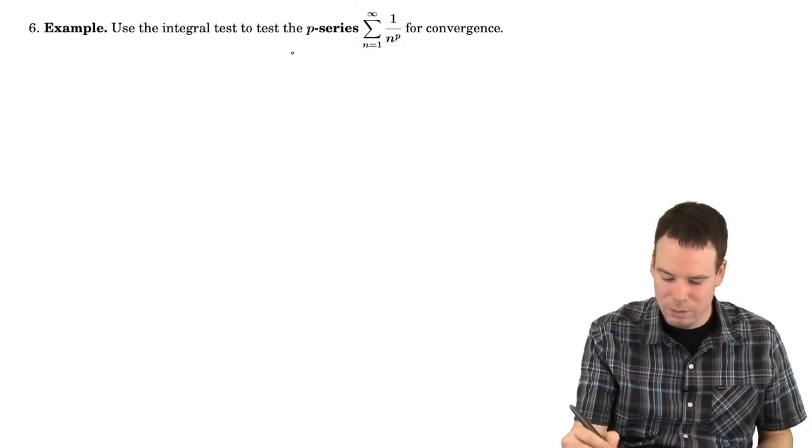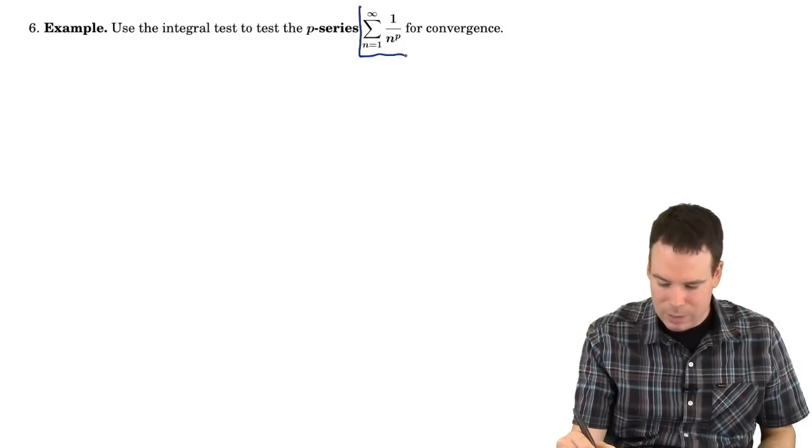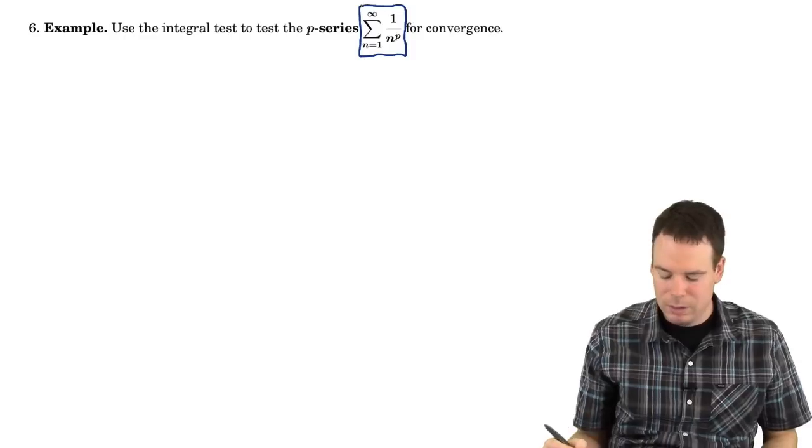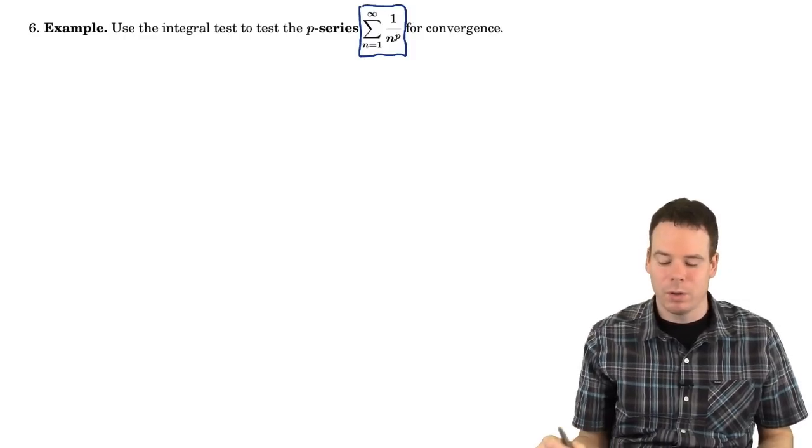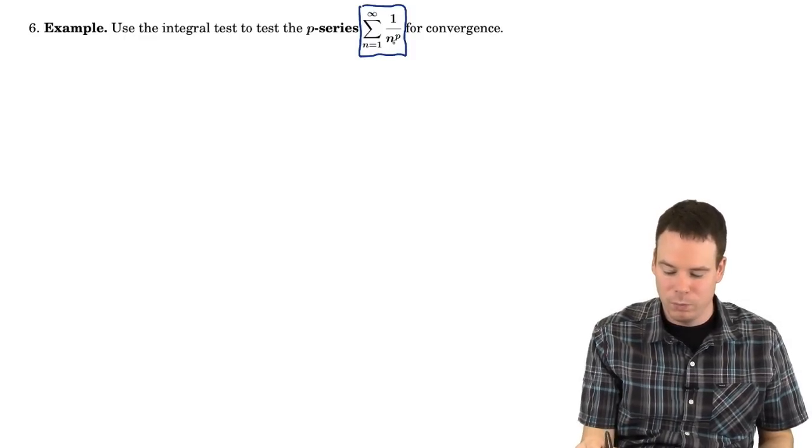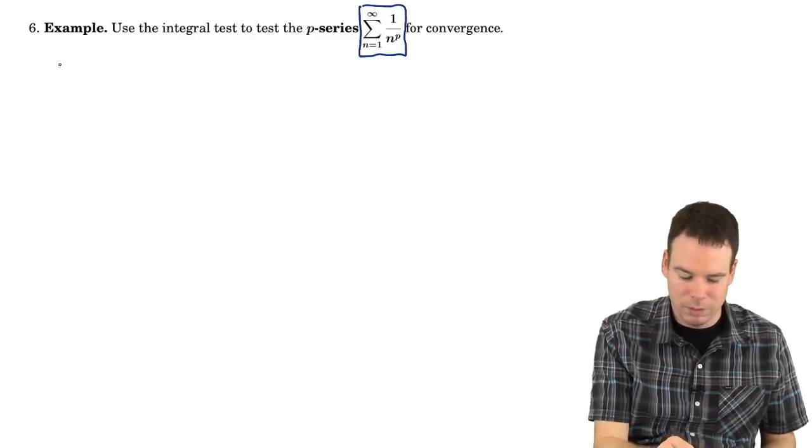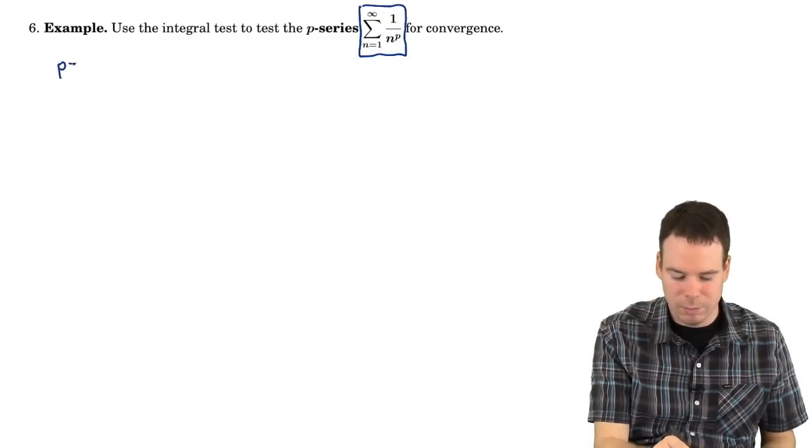In this next example we want to look at the p-series, so this is 1 over n to the power of p, and decide for what values of p does it converge and what values of p does it diverge. We've already seen a couple of examples.